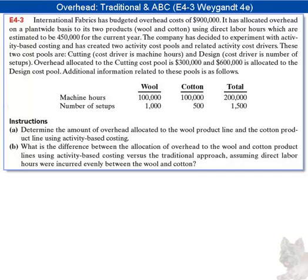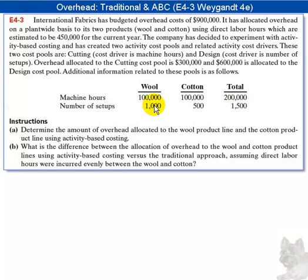Additional information related to these two cost pools appears in the middle section. Machine hours for wool are 100,000 and for cotton 200,000, for a total of 200,000. The number of setups: wool takes 1,000 and cotton takes 500, for a total of 1,500.